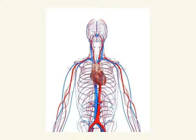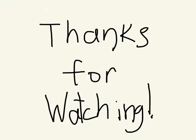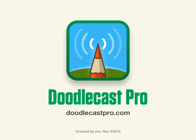This is a picture of the blood vessels in a human body. The blue ones are veins and the red ones are arteries. Thanks for watching, made with Doodle Cast Pro.